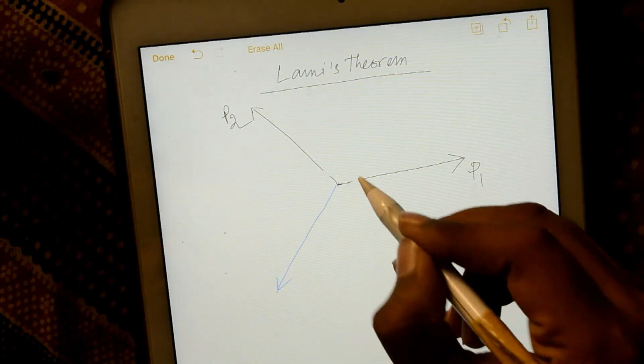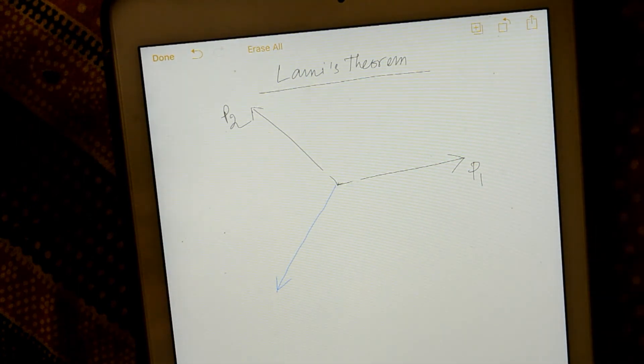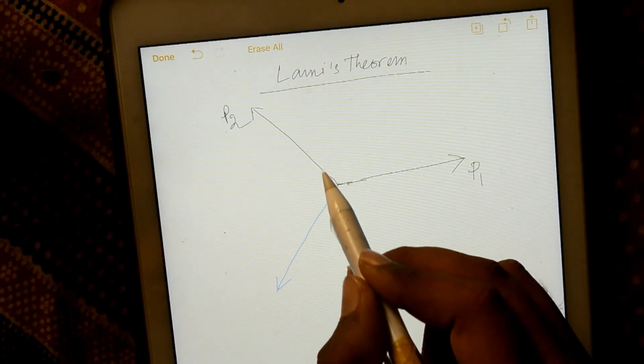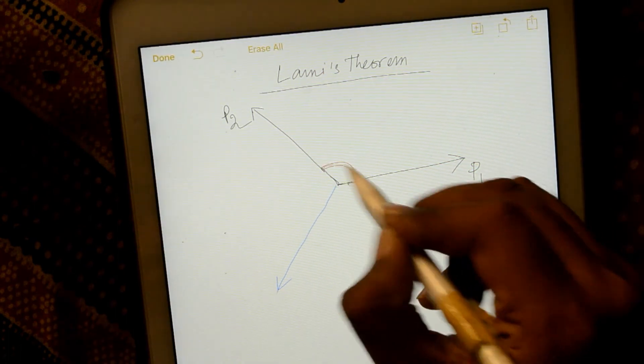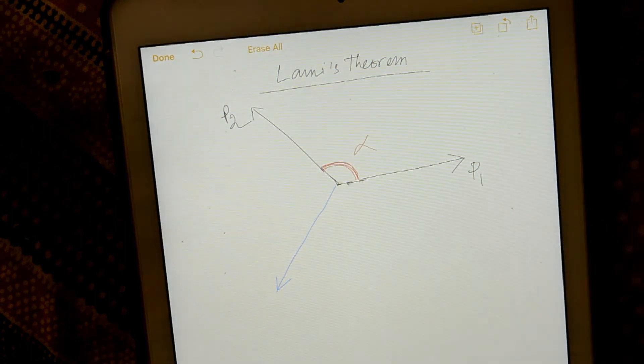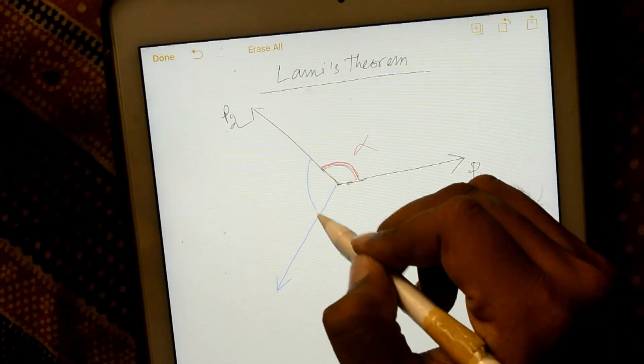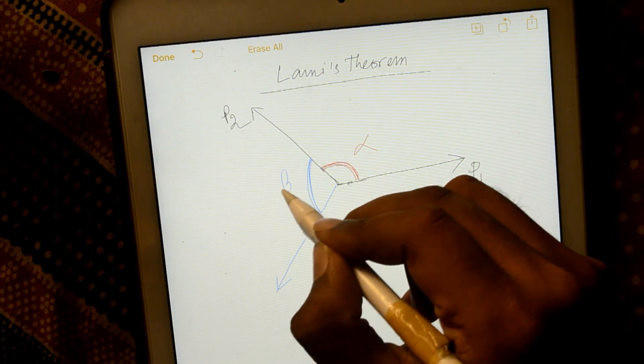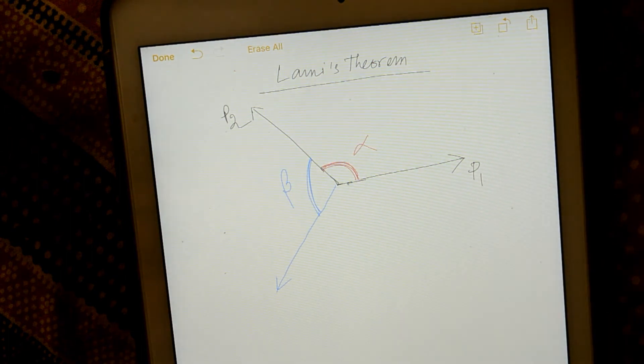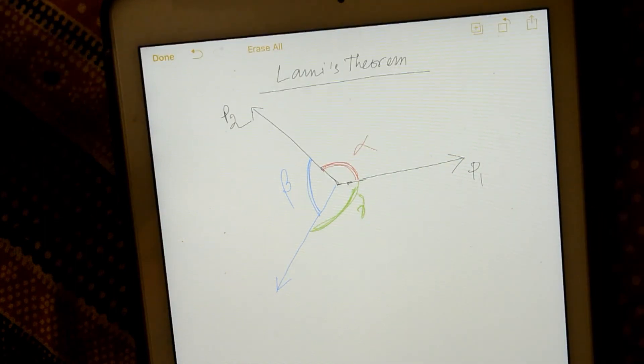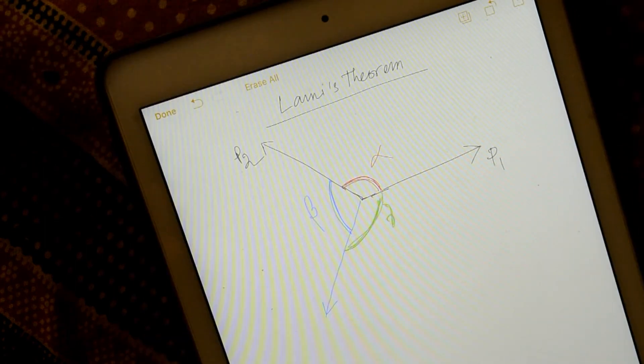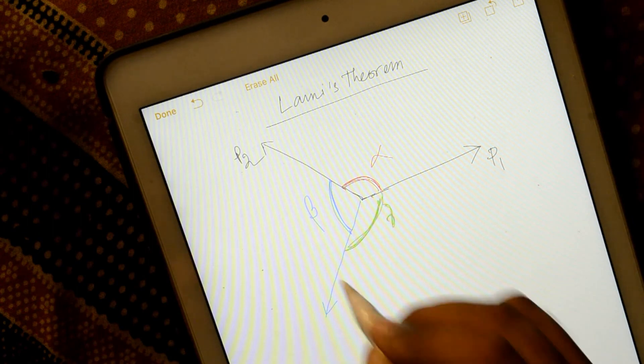Magnitude, this is the alpha and this is the beta and this is the gamma. And this is the P1.